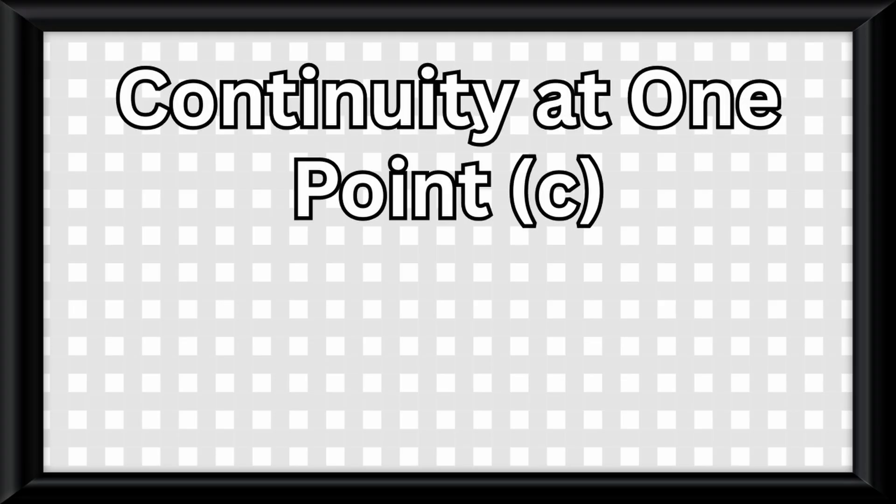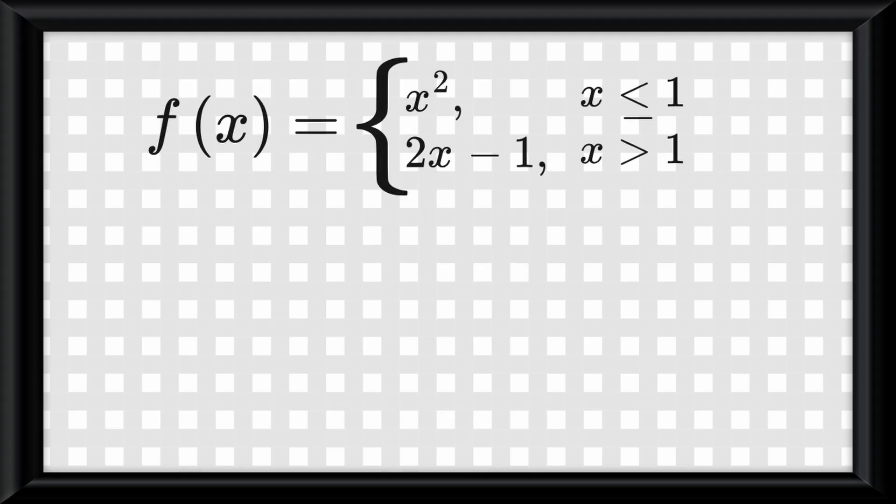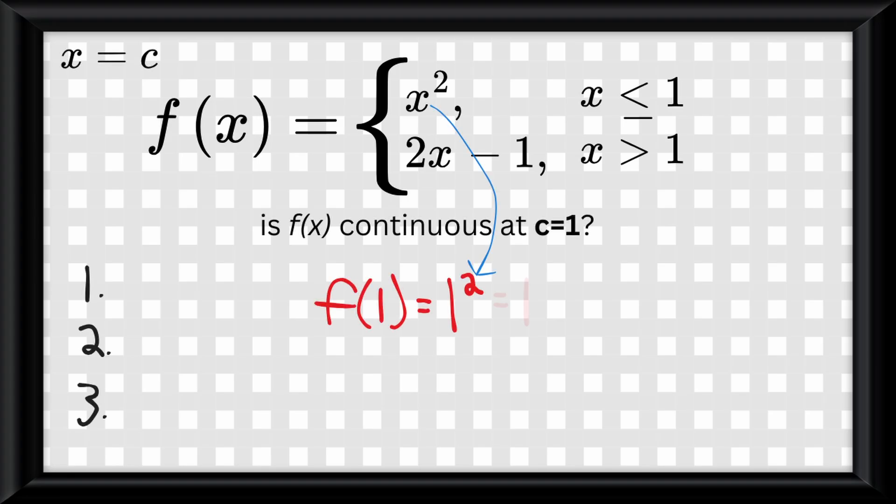Now I want to describe the math definition for continuity at one point. Three things have to be true for one point to be continuous at the point x equals c. f of c has to be defined, the limit as x approaches c of f of x has to exist, and the limit as x approaches c of f of x has to equal f of c. Let's try an example. This piecewise function. Is it continuous at c equals 1? First of all, let's see if f of 1 is defined. Yes, it is, because it would equal 1.